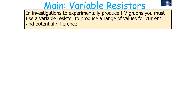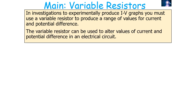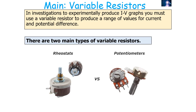In investigations to experimentally produce IV graphs, you have to use a variable resistor to produce a range of values for current and potential difference. The variable resistor can be used to alter those values in your electrical circuit. There are two main types of variable resistor: the rheostat and the potentiometer.